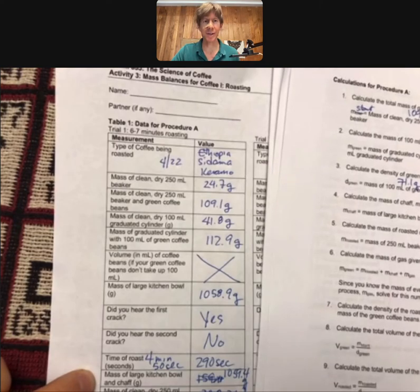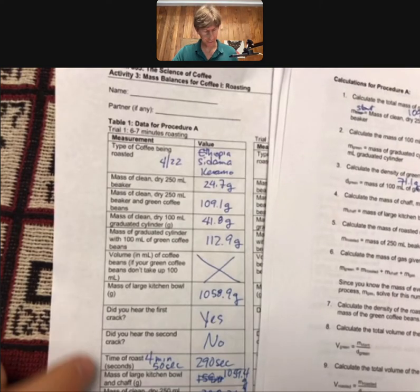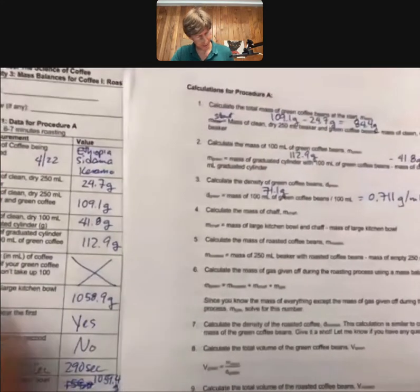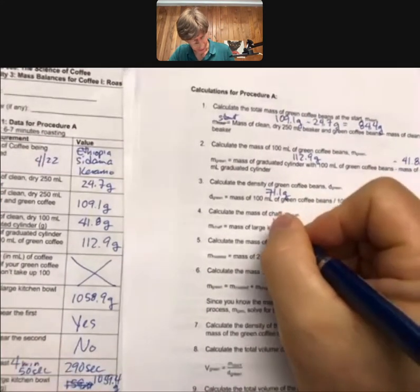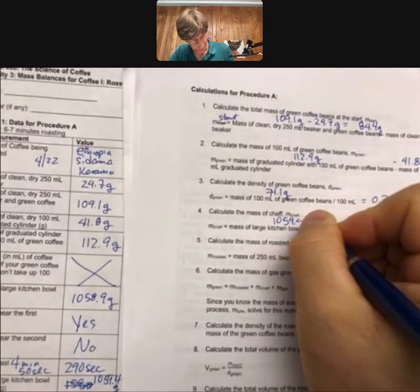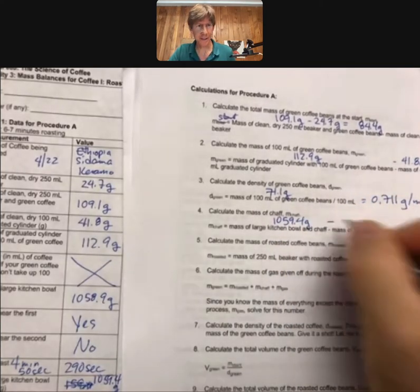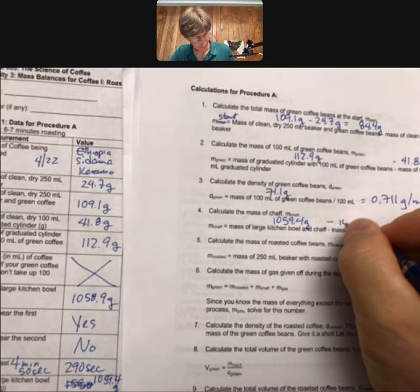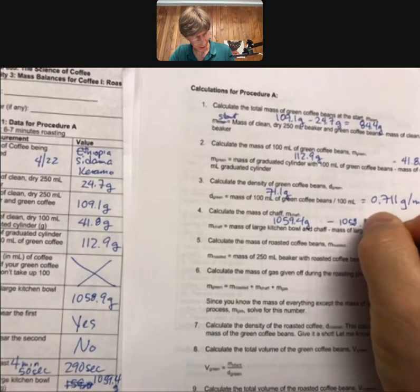Here, 1059.4 for me, minus the mass of the large kitchen bowl, 1058.9. So 1059.4 grams minus 1058.9 grams.